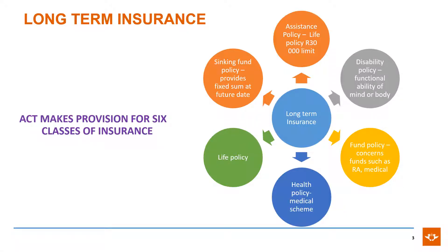The Long-Term Insurance Act makes provisions for six classes of insurance: assistance policies, disability policies, fund policies, health policies, life policies, and sinking fund policies.